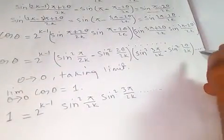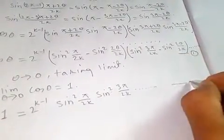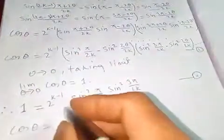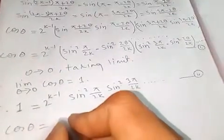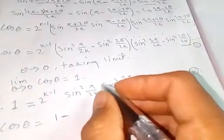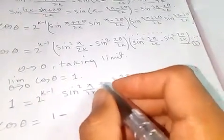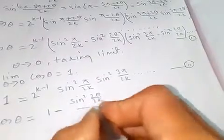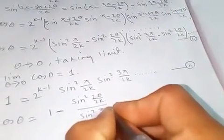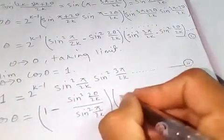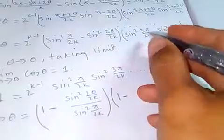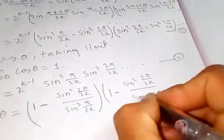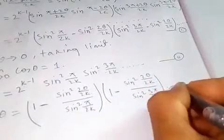Let's call the first expression S1 and the second S2. Dividing, cosine theta divided by S1 gives — the 2 to the k minus 1 terms cancel — and we get 1 minus sine squared 2 theta over 2k divided by sine squared pi over 2k, times 1 minus sine squared 2 theta over 3 pi, and so on, with each factor being 1 minus this ratio.